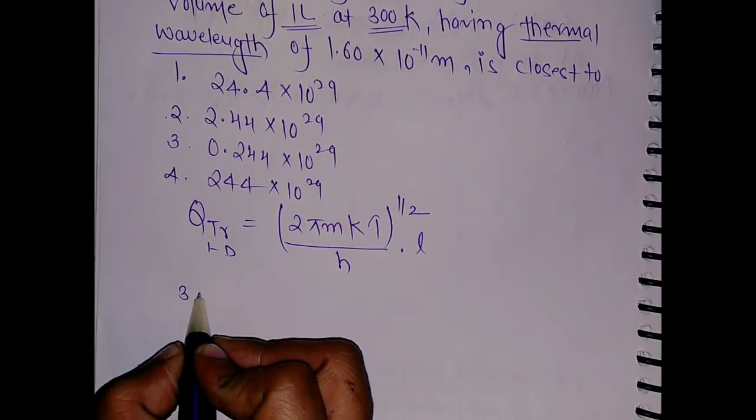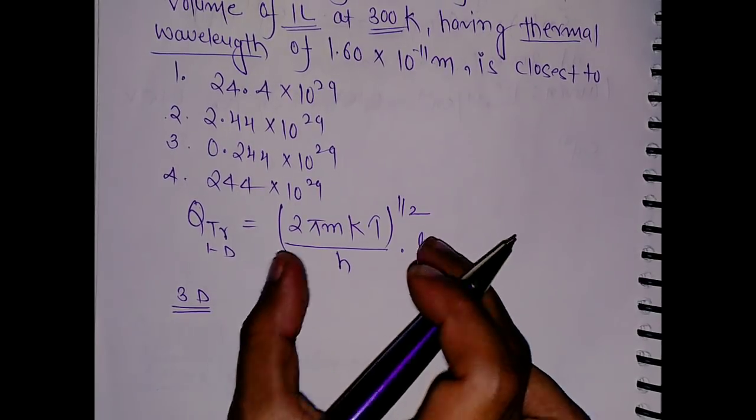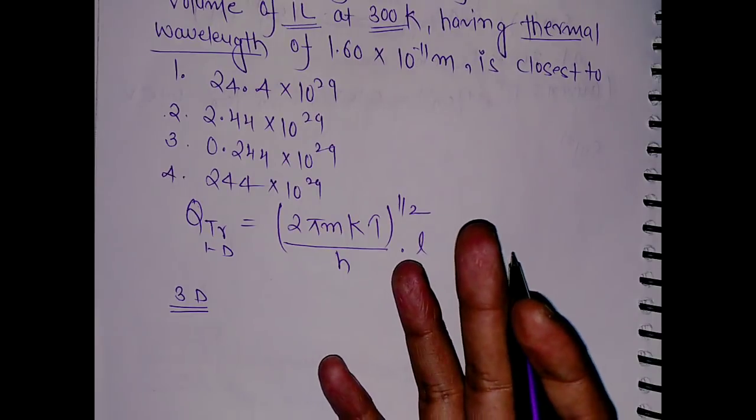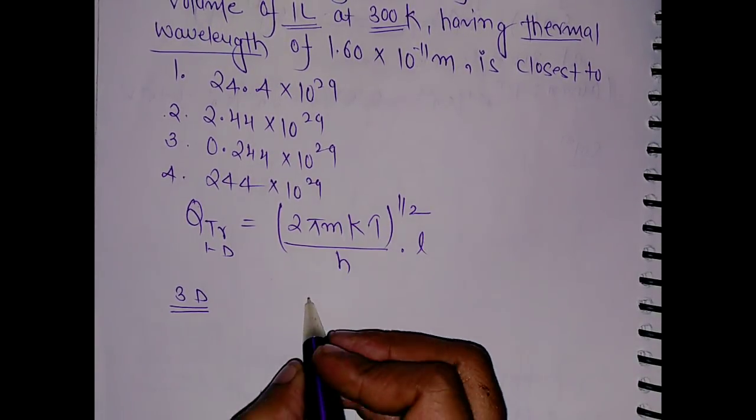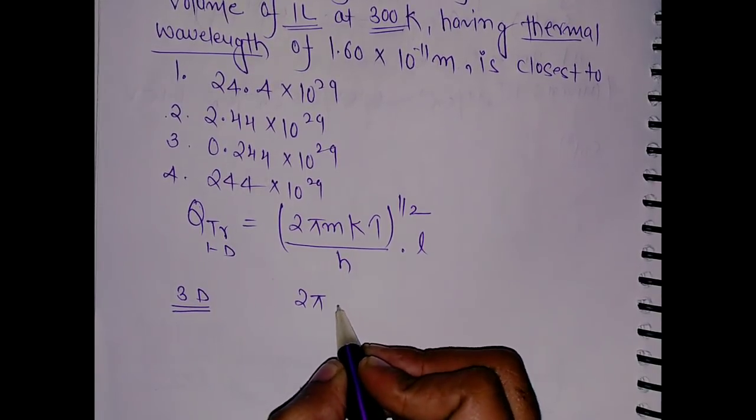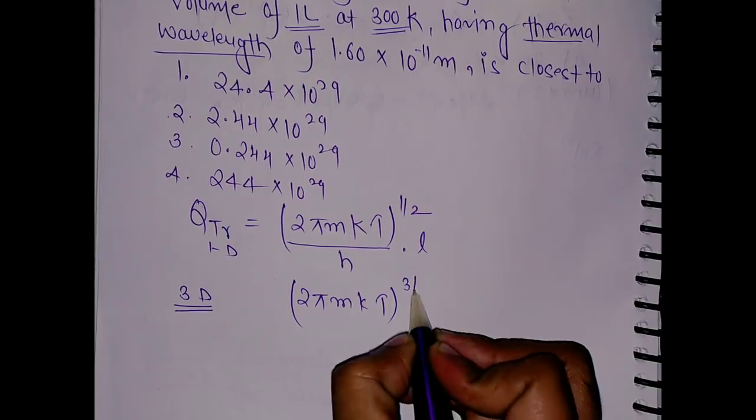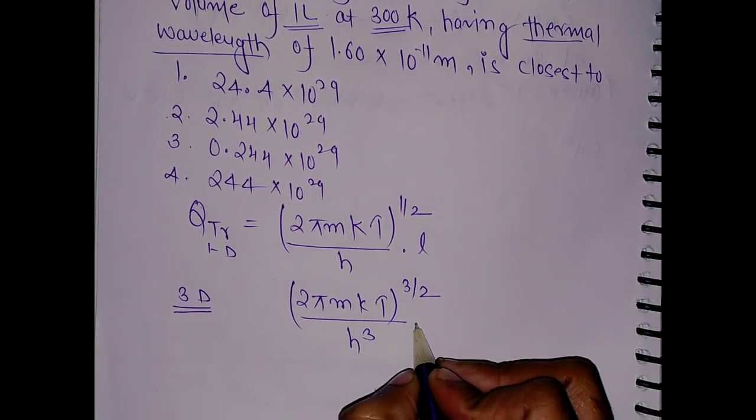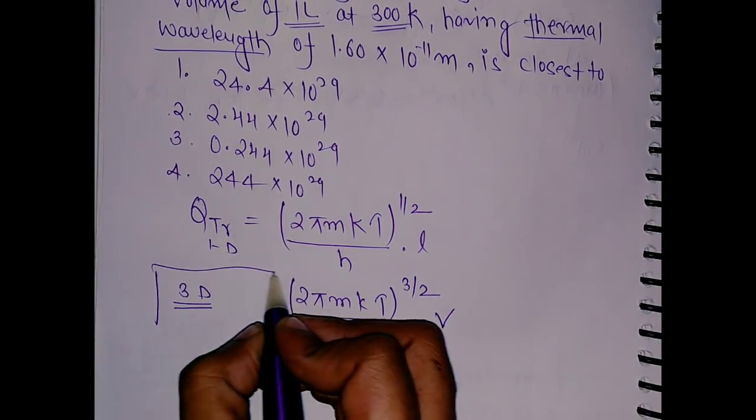For three-dimensional, multiply this term three times. The power will add up and the length cube is volume, so it becomes (2πmkt)^(3/2)/h³ × V in three dimensions.